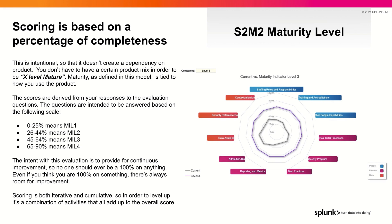Scoring is based on a percentage of completeness, and this is intentional because we don't want to create a dependency on product. We don't want to say that in order to be X mature you have to have ES and Core and UBA and Phantom. It's all about how you use the product — that's what makes you mature, not what products you have. The whole intent here is that nobody should really ever be 100% on anything, because this is all about continuous improvement. Even if you think you're 100%, there's always room for improvement.